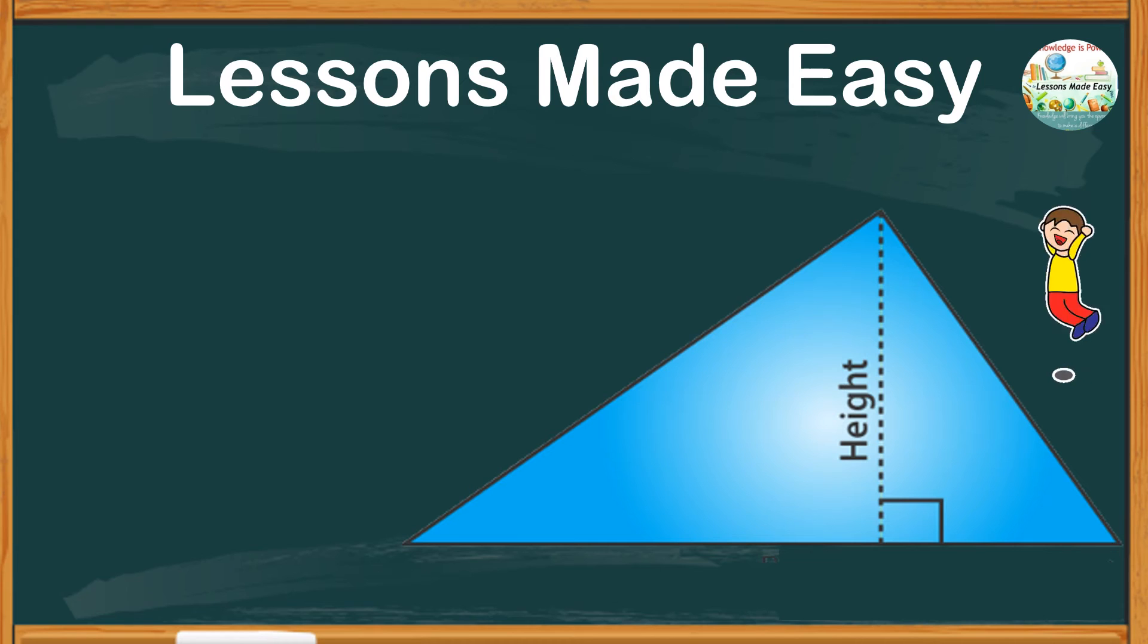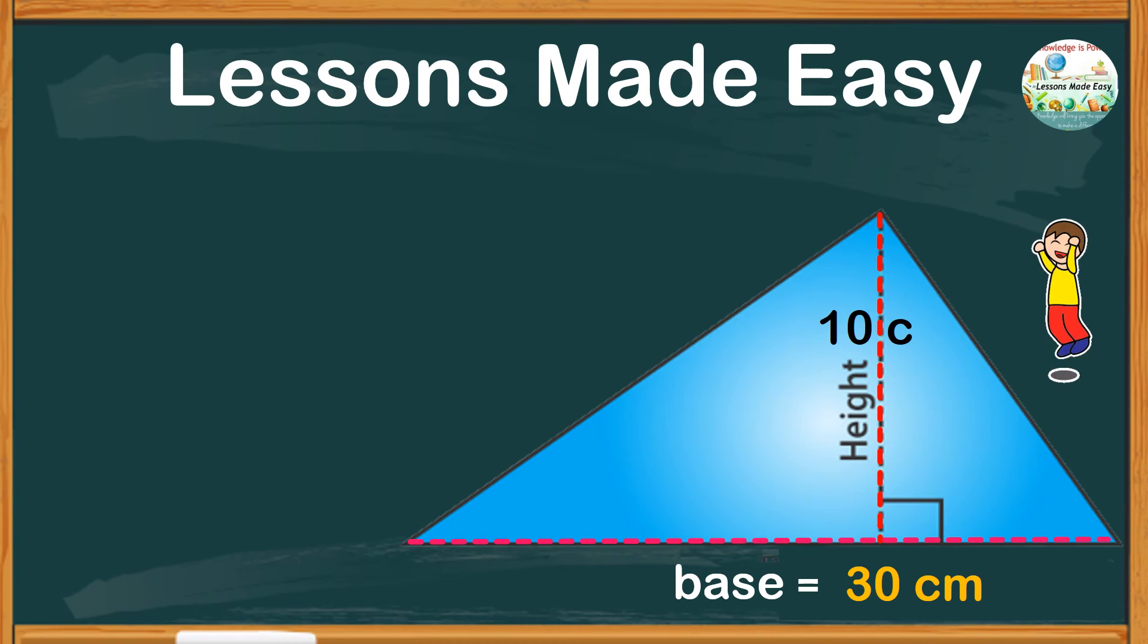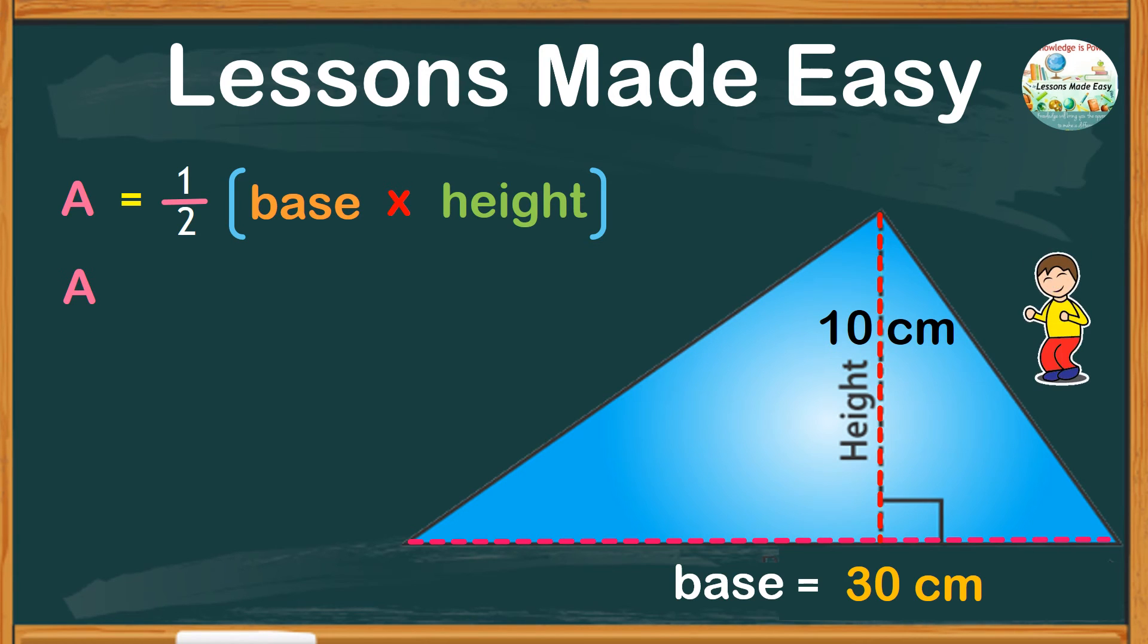All right, let's do this. Find the area of a triangle with a base of 30 centimeters and a height of 10 centimeters. To calculate for the area of a triangle, we have area equals one-half of the base times the height. We can simplify this to area equals the base times the height divided by 2.